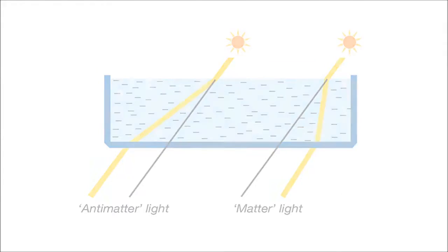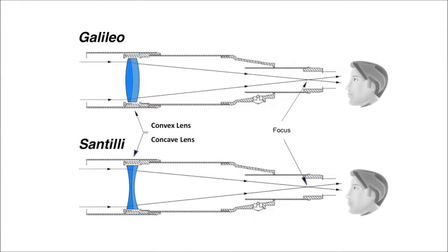As you can see in the diagram, we have two telescopes: the Santilli and the Galileo. If you look closely, you'll see that the only real difference between the two is the lens. Notice that the Galileo uses a convex lens, whereas the Santilli Telescope uses a concave lens.